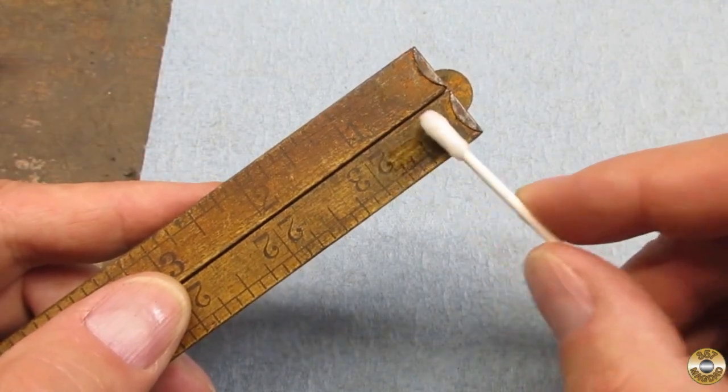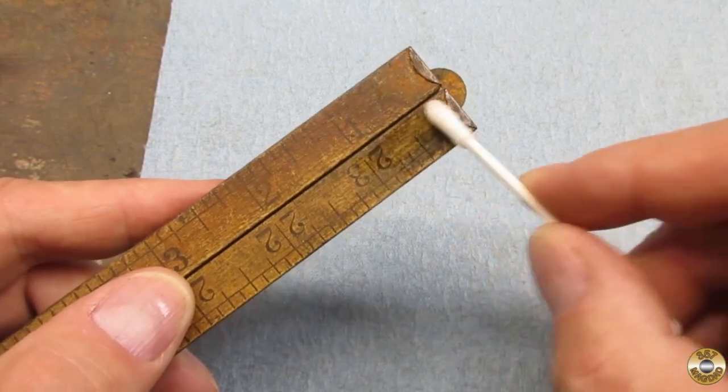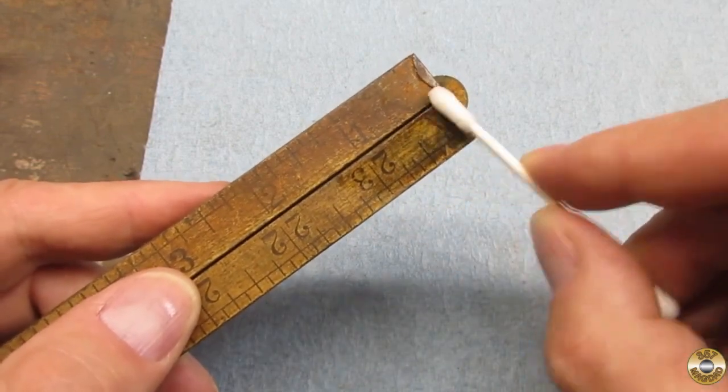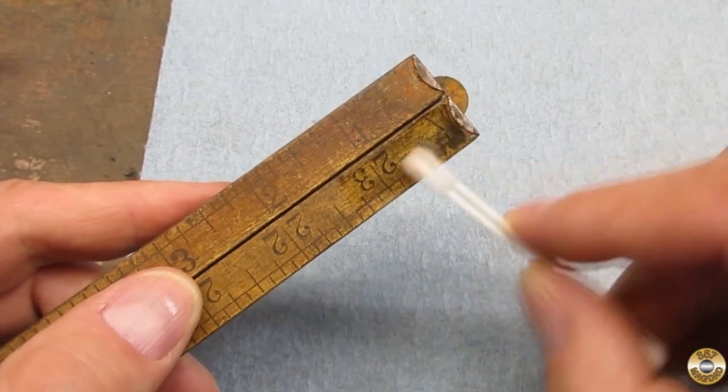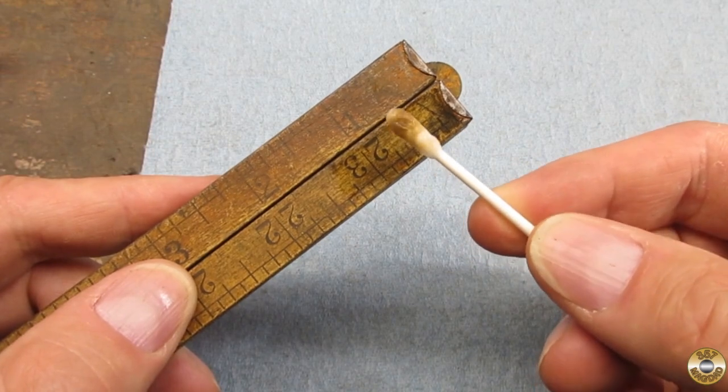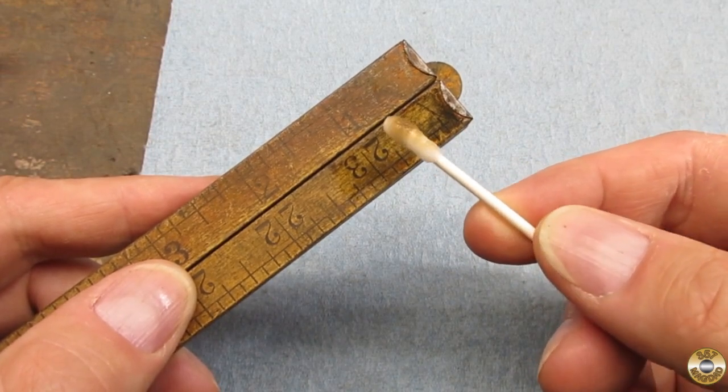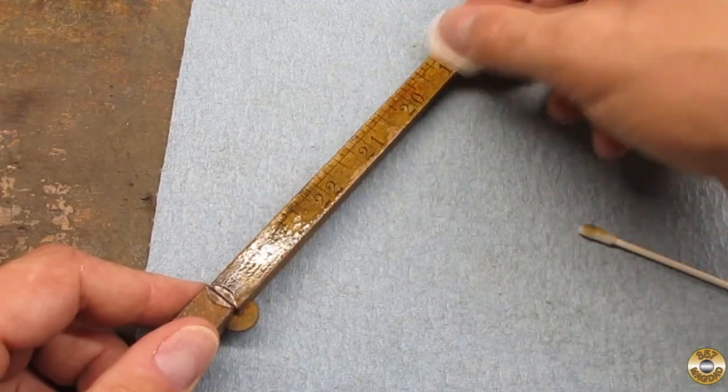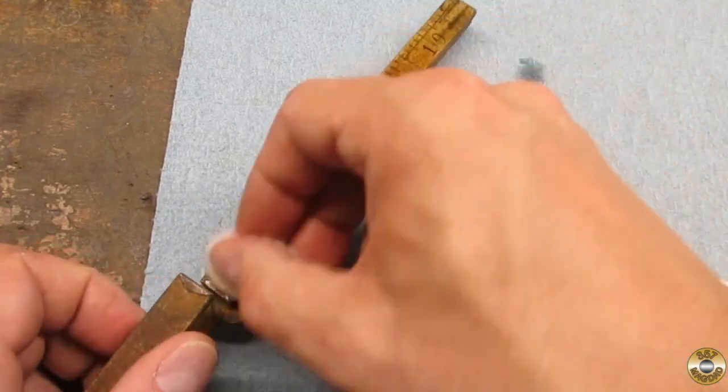My first attempt was a q-tip and tap water. It looked like water was removing some of the grime. So I went over one section of the ruler with tap water, using a cotton ball.